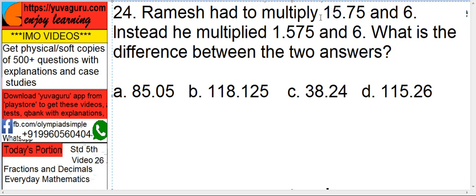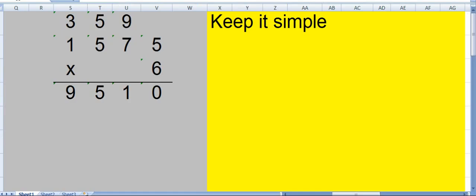The numbers are the same, 1575 and 6. Only the difference is in the decimal points.